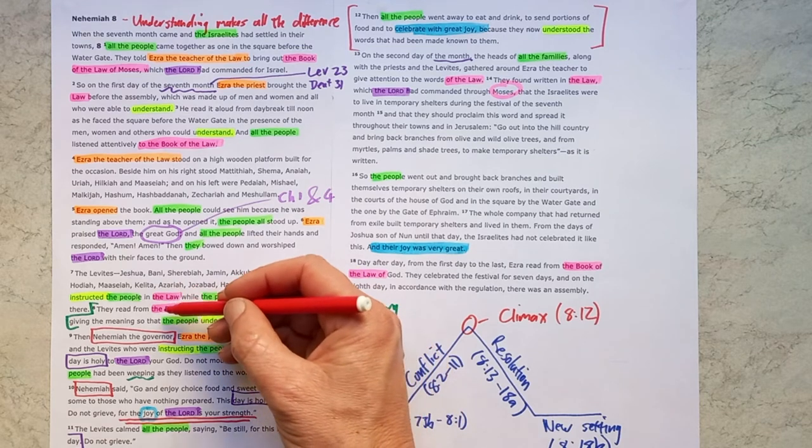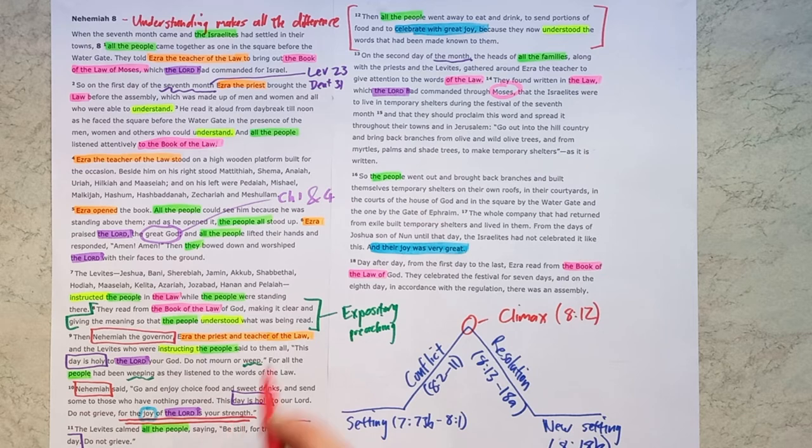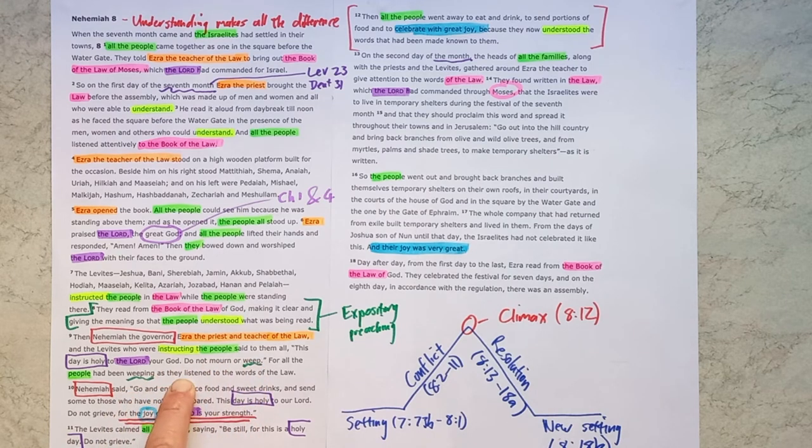As God's law was being read, it would have reminded them of how their ancestors had been saved from Egypt. They had been rescued, delivered. They were God's treasured possession. And as they heard that news of how God had saved them, it should have caused them to rejoice greatly in who God is and what he had done for them. And so the joy of the Lord and what he has done for them is what would have strengthened them, strengthened them to be a people who actually obey God's word.